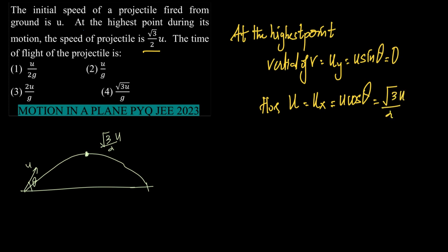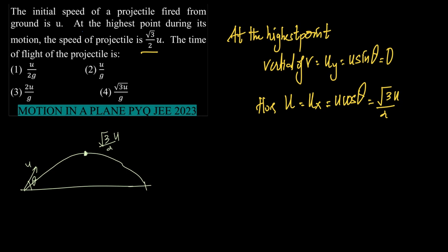So, the only velocity the object possesses here is Ux. I would like to repeat the concept again. When the object is projected with velocity U, it has two components: the vertical component Uy and the horizontal component Ux. And as it reaches the highest point, gradually the Uy decreases and Ux remains the same. And at this point, the only component of velocity present is Ux and there is no Uy.